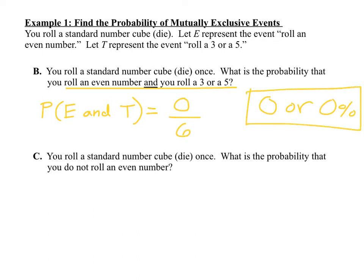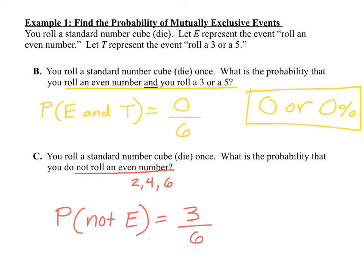That's because those two events are mutually exclusive — it's impossible for them to happen at the same time. Finally, suppose you roll the standard number cube once again. What is the probability that you do not roll an even number? Even numbers are 2, 4, and 6 — three even numbers. So the probability of rolling something that's not even: how many numbers on the cube are not 2, 4, or 6? That leaves three numbers out of six, so our probability is 3/6, which reduces to one half, or 0.5, or 50%.